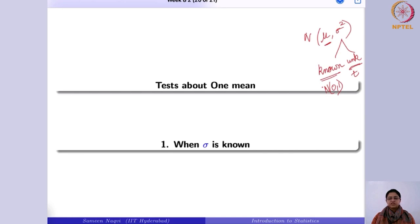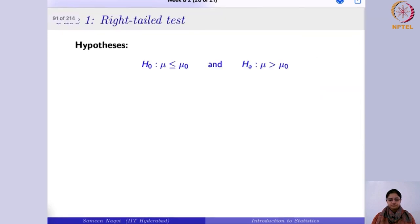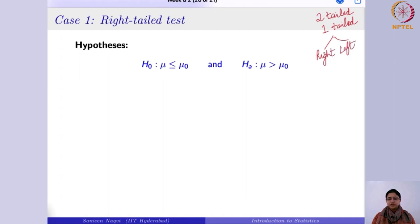First, we look at the case when sigma is known. When sigma is known, the first case is the right-tailed test. In hypothesis testing, you can either have a two-tailed test or a one-tailed test — left or right. In the right-tailed test, the alternative hypothesis says you are looking at values greater than some threshold. In the left-tailed test, it is the reverse — you are interested to see whether the population parameter is less than the hypothesized value.